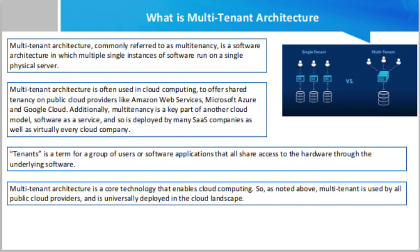The disadvantages of multi-tenant architecture include: downtime — outages can be widespread and often make the news, though SaaS providers build redundancy into the system to minimize this; and the noisy neighbor problem, where someone else on your CPU might be consuming cycles and slowing you down, as capacity is supposed to be elastic but that is not always the case.